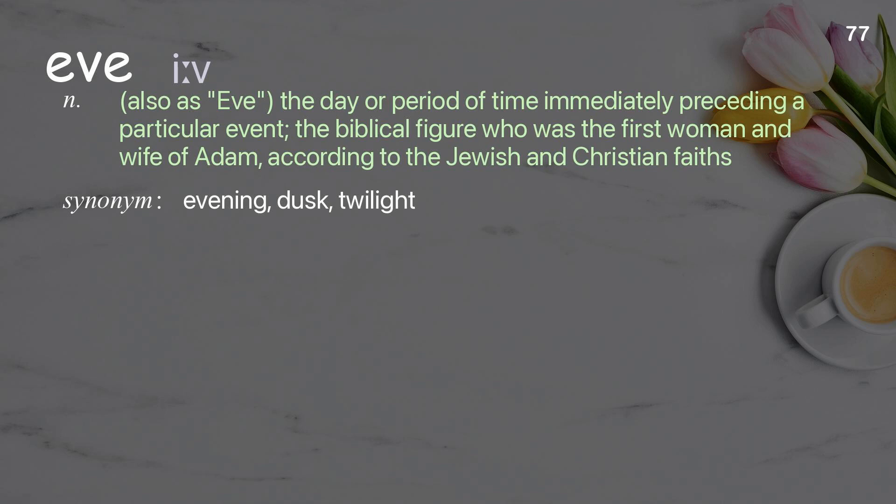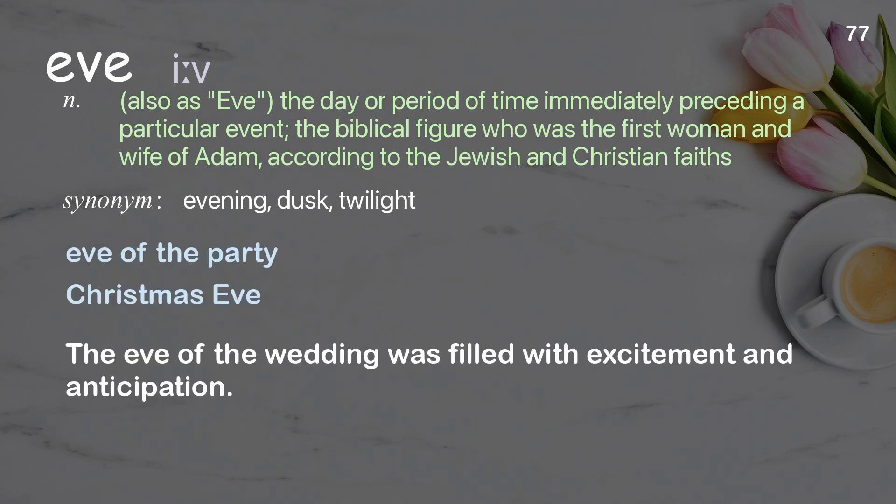Eve: also as Eve, the day or period of time immediately preceding a particular event; the biblical figure who was the first woman and wife of Adam, according to the Jewish and Christian faiths. Examples: eve of the party, Christmas Eve. The eve of the wedding was filled with excitement and anticipation.